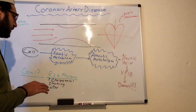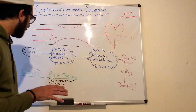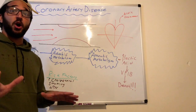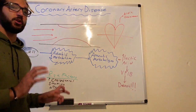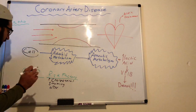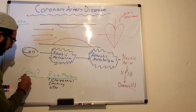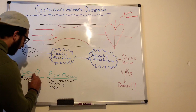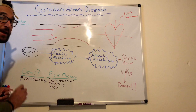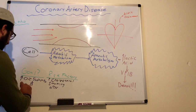For the pathophysiology behind coronary artery disease, it's important to understand the goal for any type of cardiac disease. The goal is to increase the supply of oxygen and decrease the demand of oxygen.